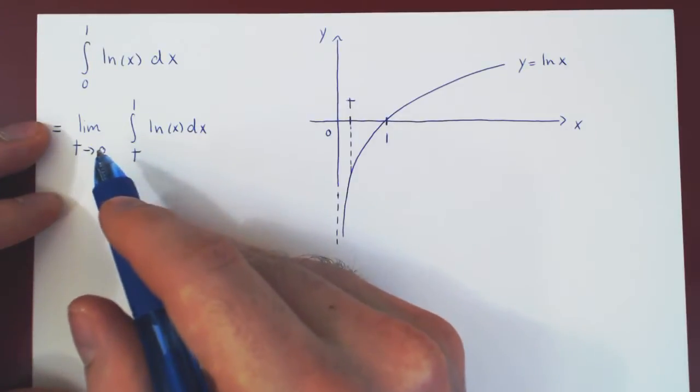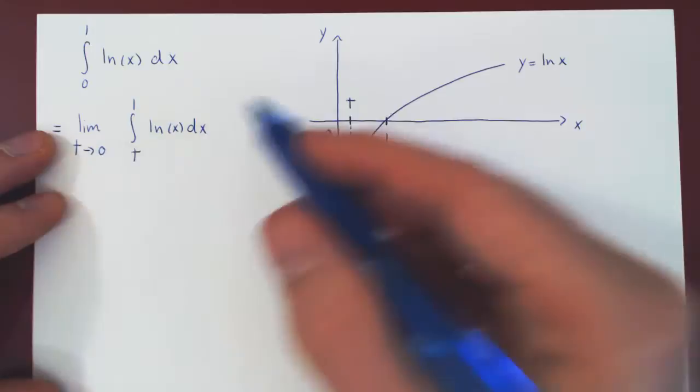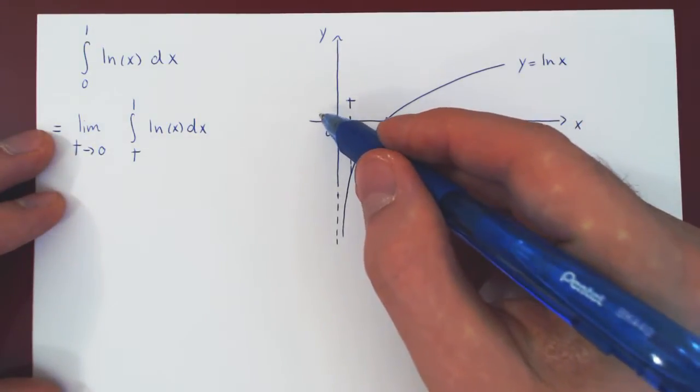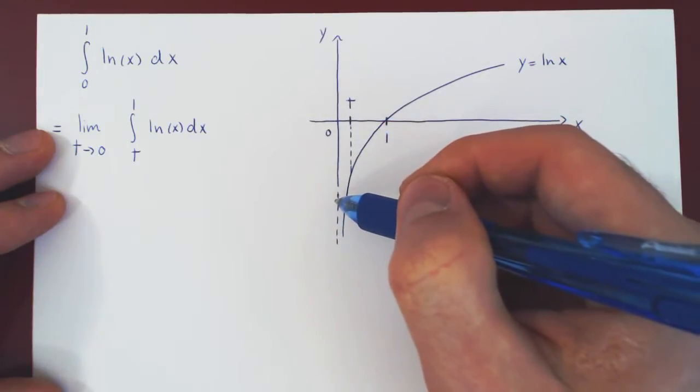If we leave it like this, we're actually wrong. Because if we simply say t approaches 0, t could be slightly larger than 0 or slightly smaller. But if it's smaller, we're overshooting our discontinuity and we're not avoiding it.